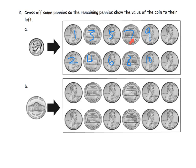So those are the pennies we need to keep. And they said cross off the pennies that we don't need. So there we go. I've crossed off two pennies because I need 10.